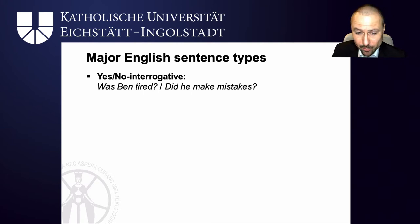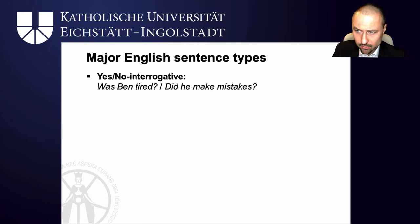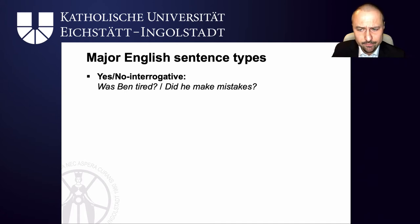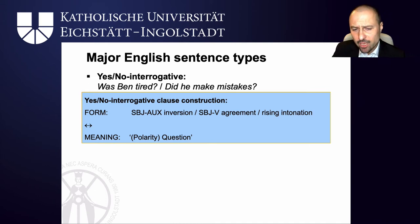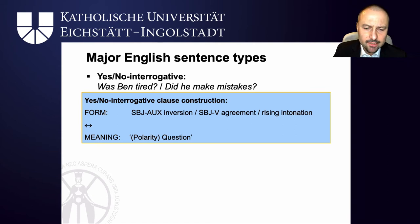In contrast to wh questions, polarity questions — yes-or-no questions — ask for an answer that is yes or no, so out of two options. 'Was Ben tired?' Yes he was / No he wasn't. 'Did he make mistakes?' Yes he did / No he didn't. In yes-or-no interrogative clause constructions, the constraints are that you have subject-auxiliary inversion — again, if you don't have an auxiliary you need do-support — and there's subject-verb agreement: 'was Ben tired?', 'were they tired?'. But this time you get rising intonation: 'Was Ben tired?', 'Did he make mistakes?' And that signals to the hearer that it's a polarity question.